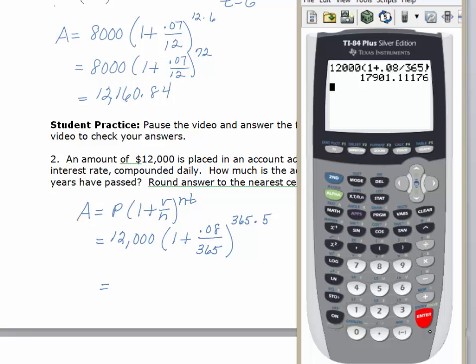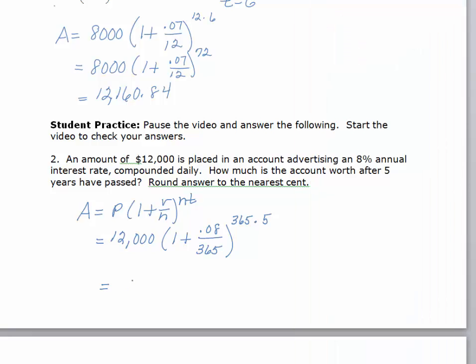And so we can see here that I'm rounding this one to the nearest cent also. So we're going to have $17,901 and 20 cents.